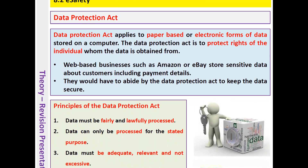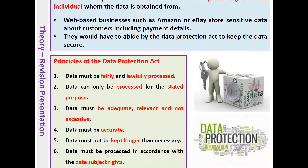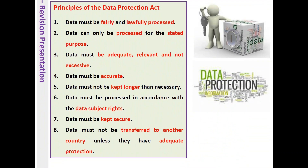The Data Protection Act applies to paper-based or electronic forms of data stored on the computer. The Data Protection Act is to protect the rights of the individual from whom the data is obtained. Web-based businesses such as Amazon or eBay store sensitive data about customers including payment details, and they would have to abide by the Data Protection Act to keep the data secure. The worst case scenario is your details get passed on to a third party who would then have access to your data, which is why we have the Data Protection Act.